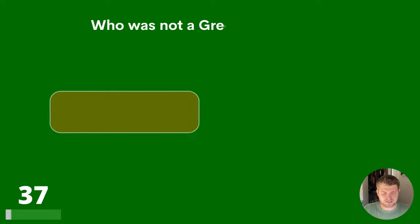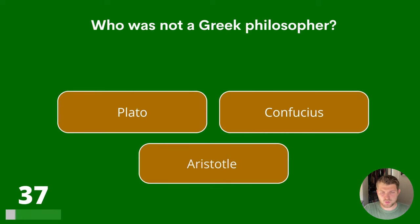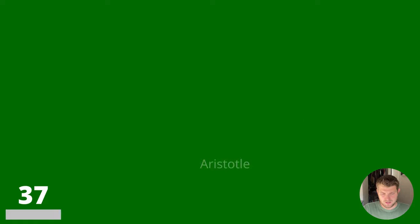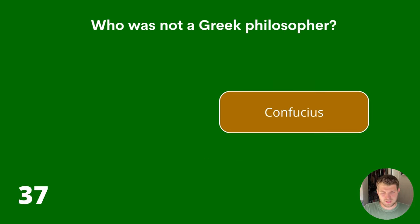Question 37. Who was not a Greek philosopher? Plato, Confucius or Aristotle? The answer is Confucius.